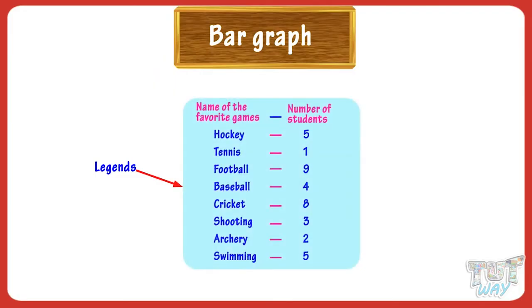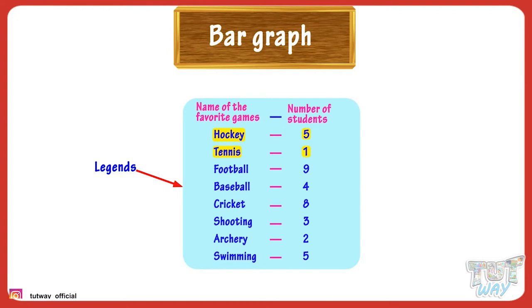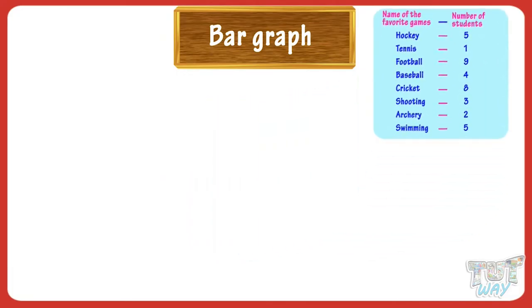Now let's see another example. We are given data from a class of students. The favorite game of each student was asked and noted down. Five students like hockey the most. The favorite game of one student is tennis. The favorite game of nine students is football, and so on.